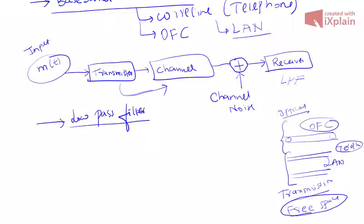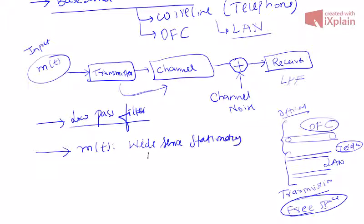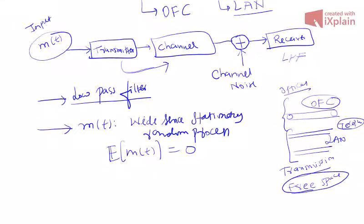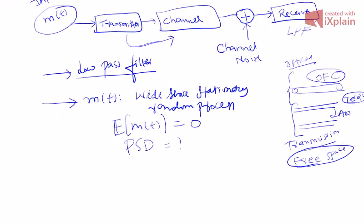We model m(t) as a wide sense stationary random process. Its mean will be constant — let's take that to be zero without loss of generality. It will have some autocorrelation function and hence some power spectral density, which will be given to us. We see that this wide sense stationary process is band-limited to B — that is, its power spectral density has components only within the frequency range −B to B.